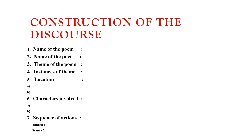Let us learn the construction of the choreography script. Here is the list. First, the name of the poem — here you need to write the name of the poem. Second, the name of the poet — here you need to write the poet's name. Sometimes the poet's name is not mentioned in the text, and then we can avoid writing it.